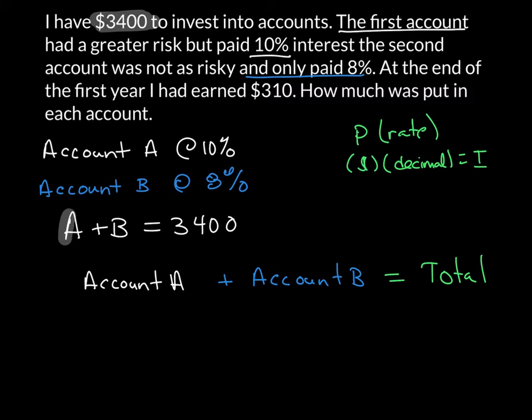For account A, I remember it's always money times the decimal. In this case, I take that 10% and turn it into my decimal. And then for account B, money times the decimal for account B, 8% turns into 0.08.